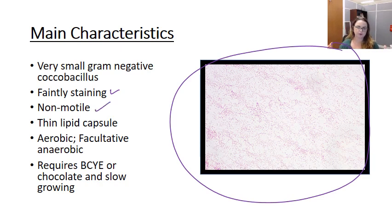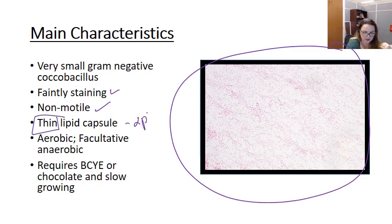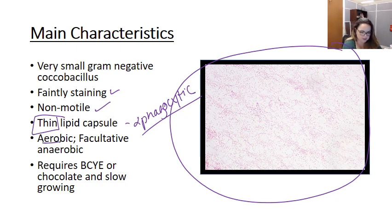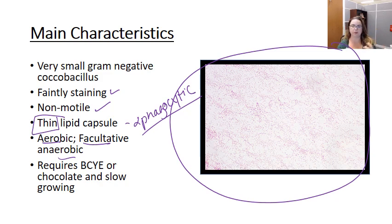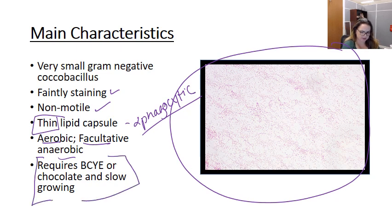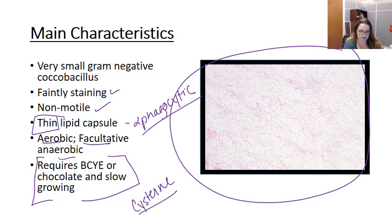It's a non-motile organism, so it doesn't have a flagella or anything like that to get around. It has a very thin lipid capsule, which is antiphagocytic, as all capsules are. We'll talk about that more and the role it plays in the immune response to Francisella. It's an aerobic organism, but it can do facultative anaerobic respiration. This is important because it spends a portion of its life cycle intracellularly. It is highly fastidious and has extra growth requirements, namely cysteine.